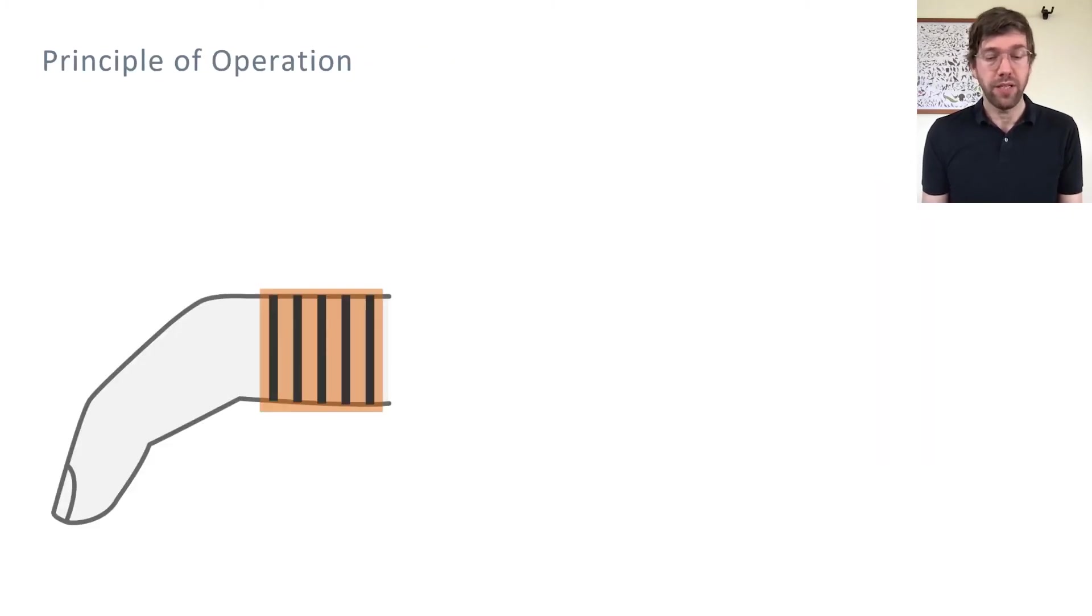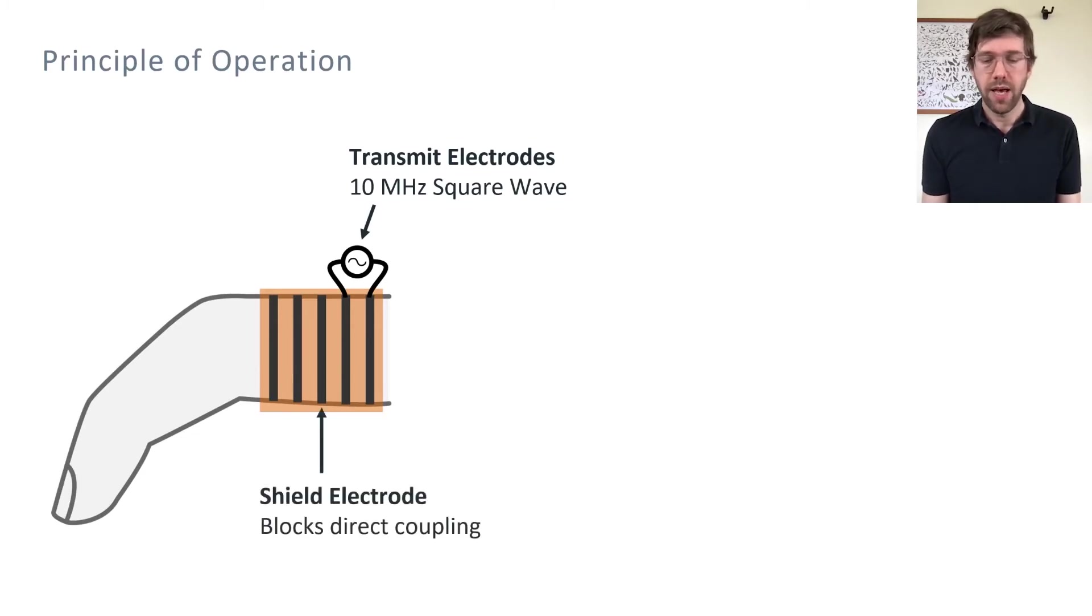ElectroRing uses five skin electrodes. Starting from the base of the finger, the first two electrodes form the transmitter. They are driven with a 10 megahertz 3.3 volt square wave. The middle electrode acts as a shield. It blocks the transmitted signal from coupling directly onto the two receive electrodes, which are located towards the fingertip.